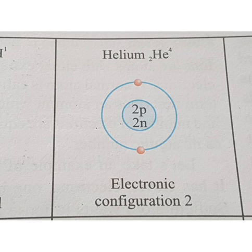Now let's move to the next example — the helium atom. Helium has atomic number 2 and mass number 4. As you can see on the screen, in the nucleus of helium there are two protons and two neutrons, while there are two electrons in the K orbital. This is the electronic configuration of helium shown in diagrammatic representation on the screen.